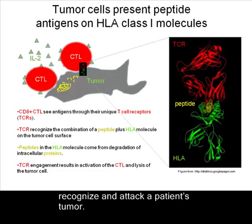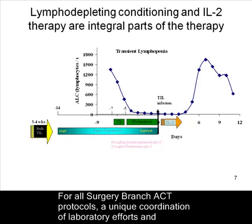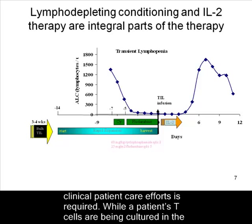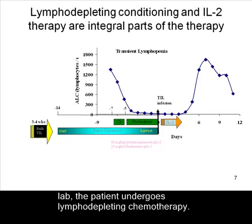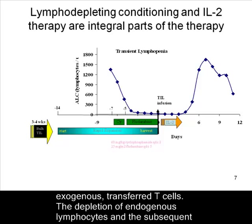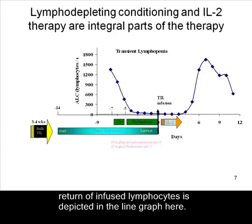For all surgery branch ACT protocols, a unique coordination of laboratory efforts and clinical patient care efforts is required. While a patient's T cells are being cultured in the lab, the patient undergoes lymphodepleting chemotherapy. The purpose of this is to deplete endogenous T cells and prepare the body to receive the exogenous, transferred T cells. The depletion of endogenous lymphocytes and subsequent return of infused lymphocytes is depicted in the line graph here.